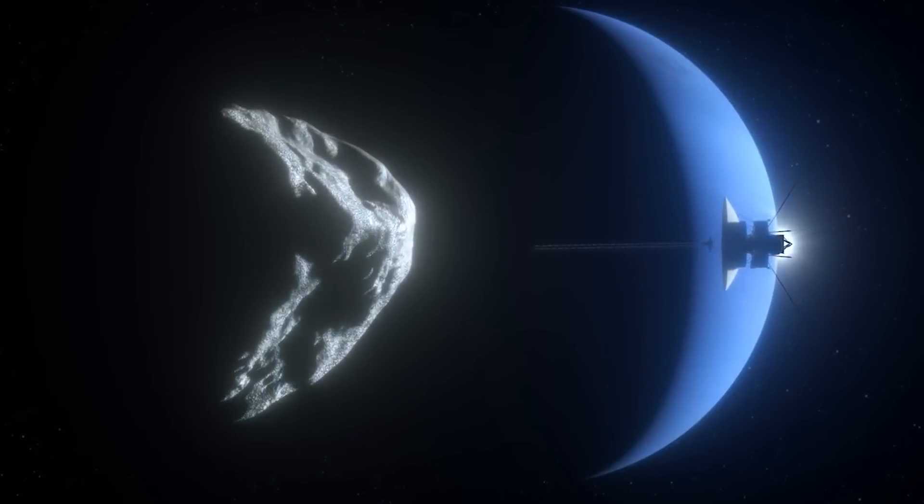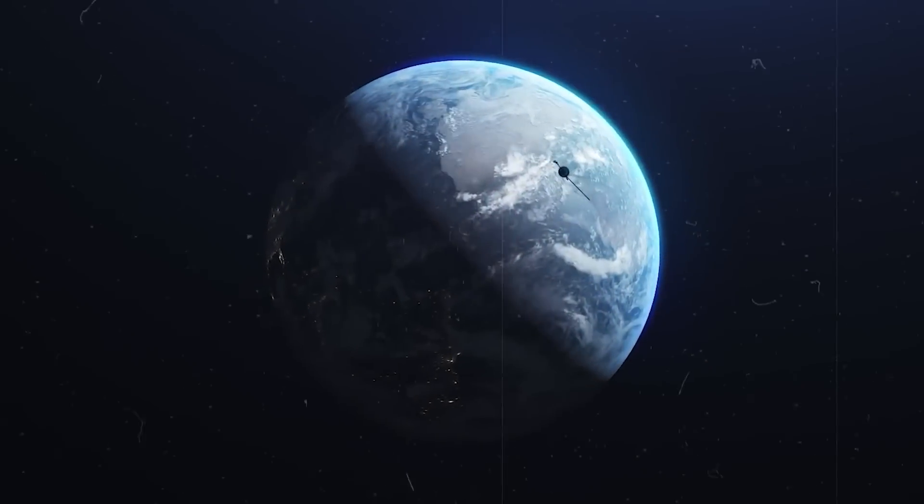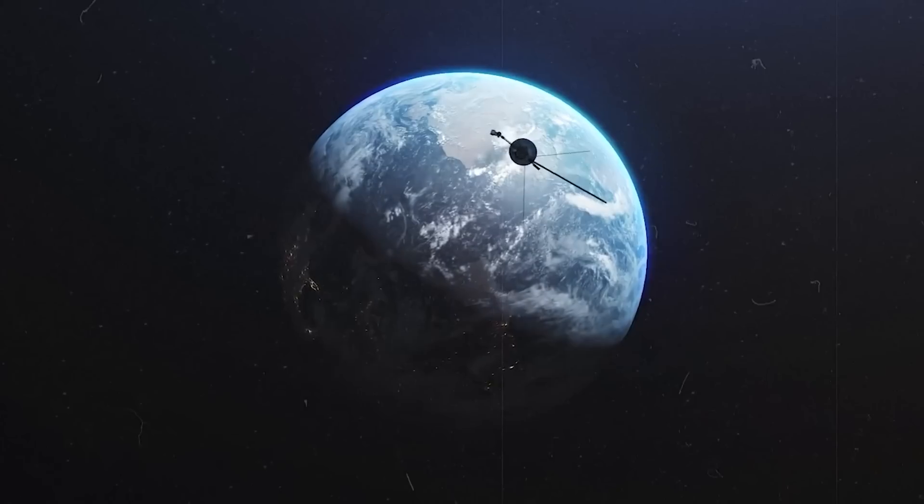However, before bidding farewell to imaging, Voyager 1 captured the renowned pale blue dot photograph of Earth. Taken from a staggering distance of approximately six billion kilometers, it still stands as the most distant image of our planet ever captured. However, this remarkable achievement merely marked the beginning of Voyager 1's odyssey.